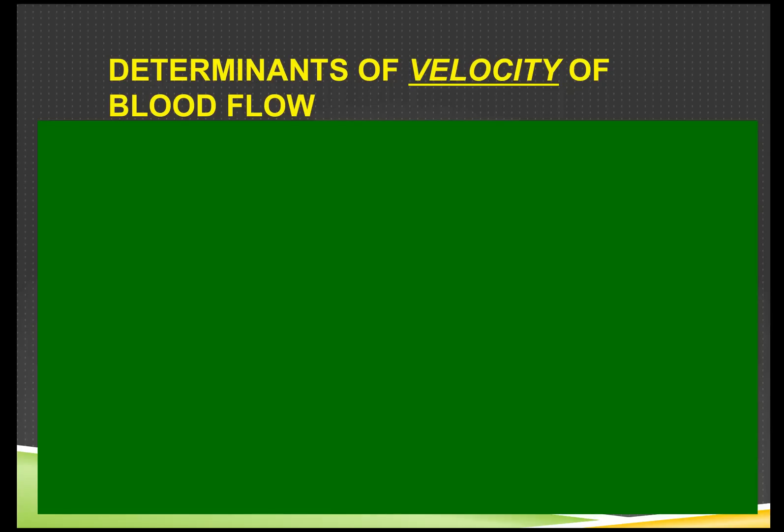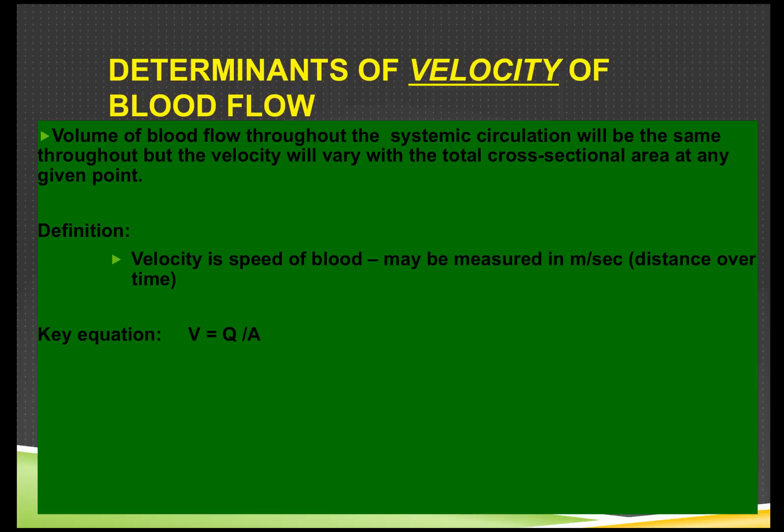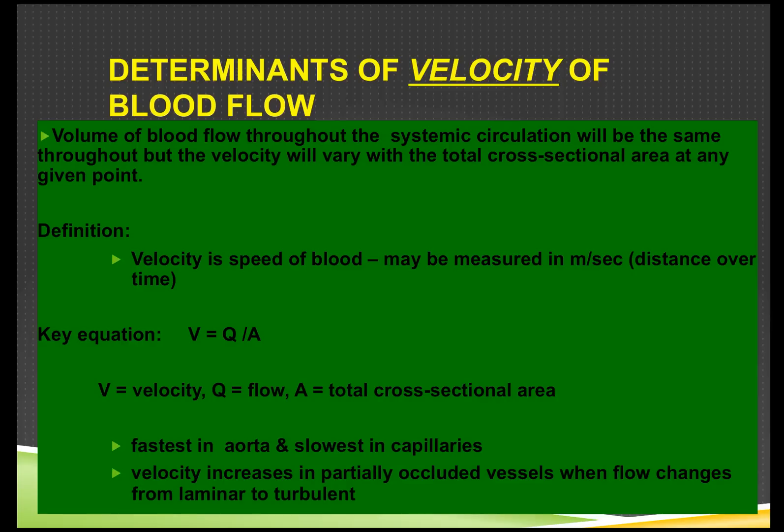The next thing we'll come on to is the velocity of blood flow. You can kind of work this backwards. The volume of blood through the systemic circulation has to be the same, but the velocity will vary depending on the cross-sectional area. Blood flows fastest in the aorta and slowest in the capillaries. If we have partially occluded vessels then we get flow acceleration, and as such flow can move from laminar to turbulent.